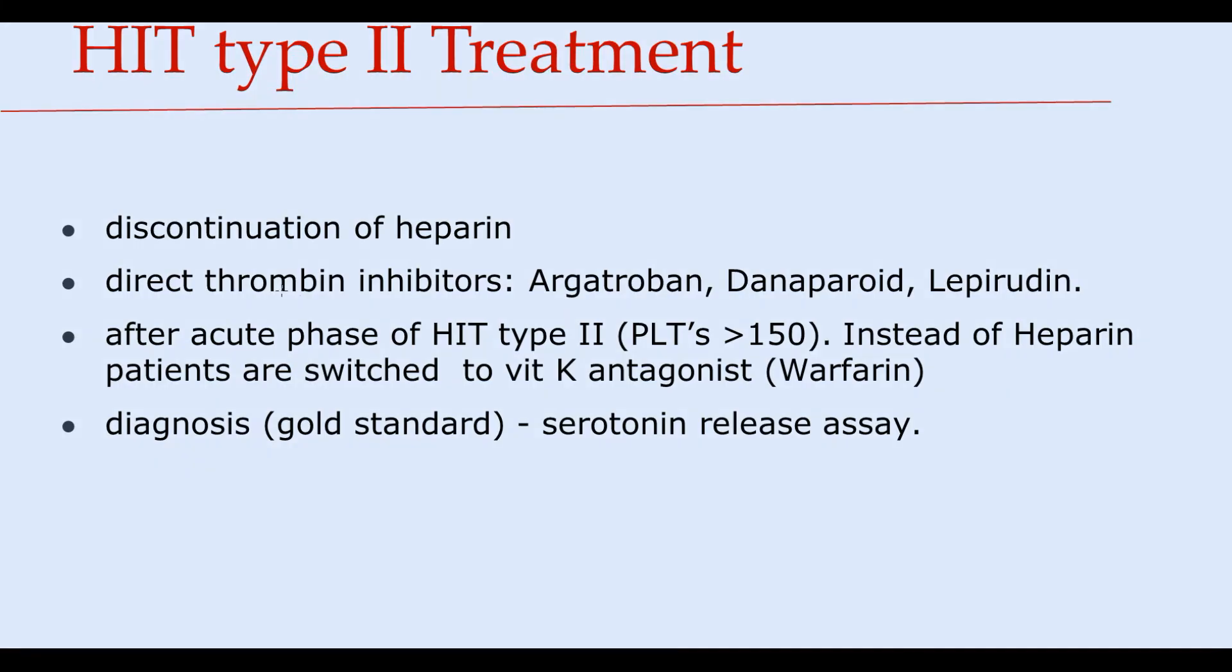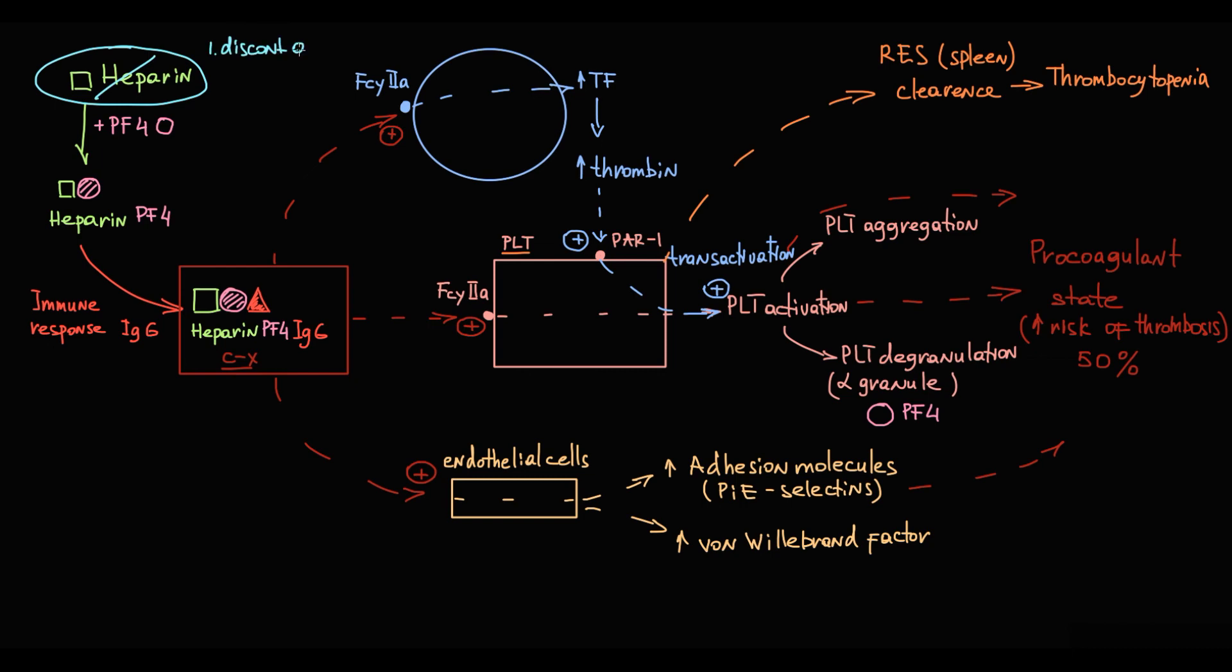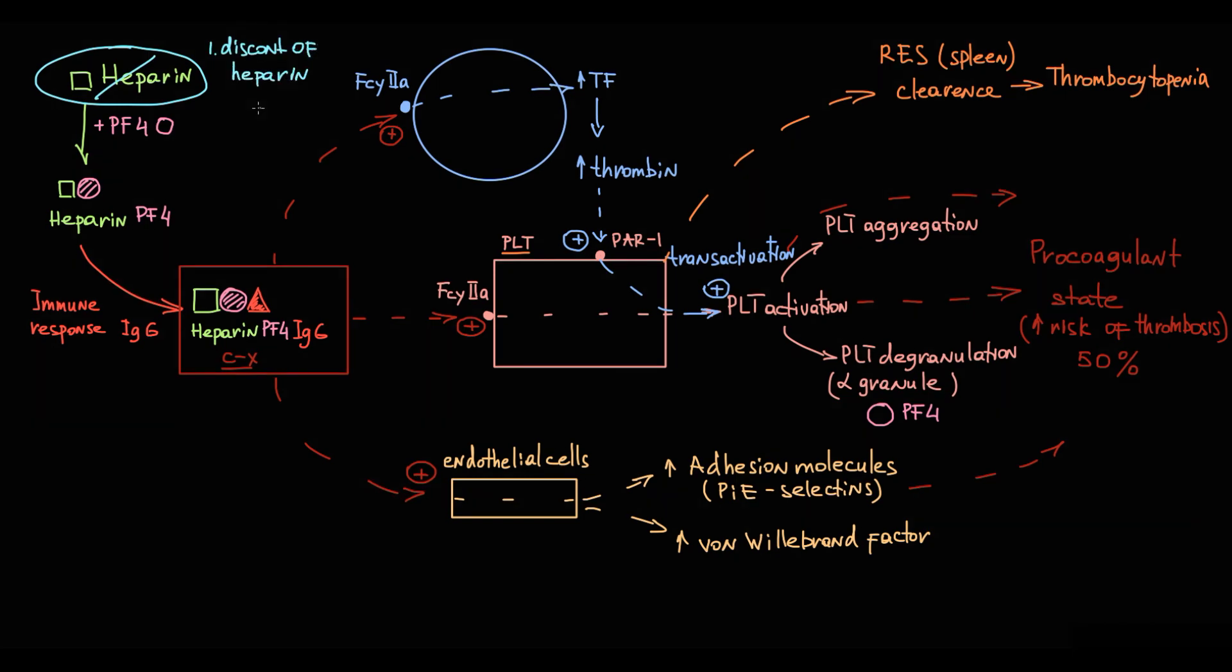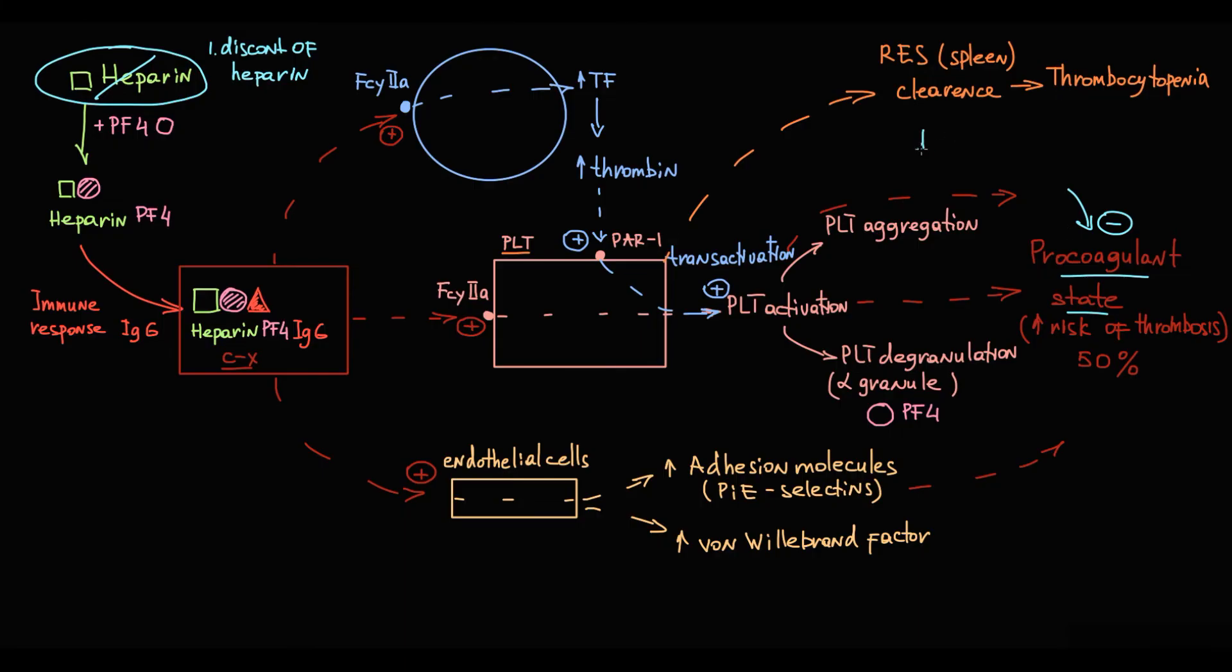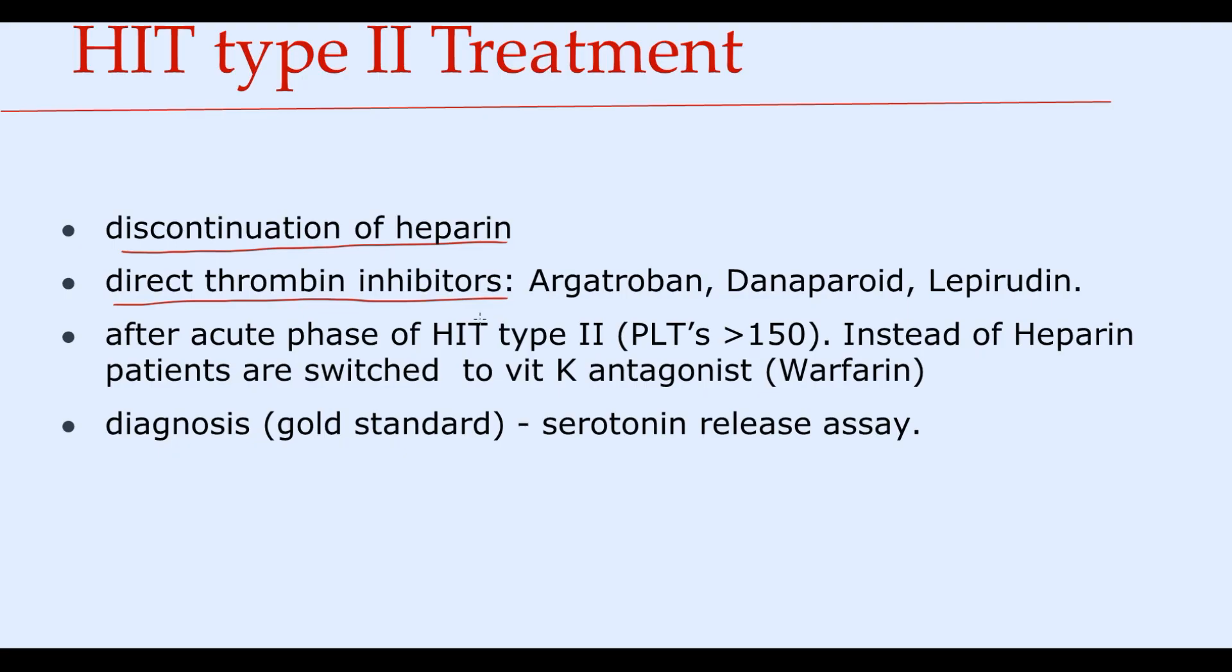What are the treatment options? First is discontinuation of heparin. We try to remove the provoking factor as soon as possible. The major problem here is local procoagulative state that creates high risk of thrombosis. In order to correct this, intravenous injection of direct thrombin inhibitors is prescribed - argatroban, danaparoid, and lepirudin. When the acute phase of heparin-induced thrombocytopenia type 2 is finished and platelet count becomes greater than 150,000, instead of heparin, patients are switched to vitamin K antagonist. But only after platelet count normalizes, which is the sign that acute phase is gone, thereby heparin-induced thrombocytopenia hypercoagulation decreases.